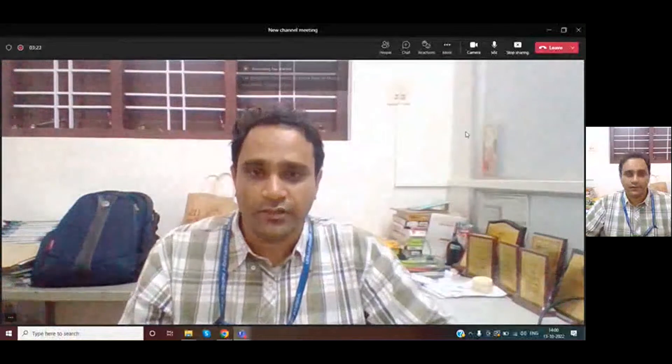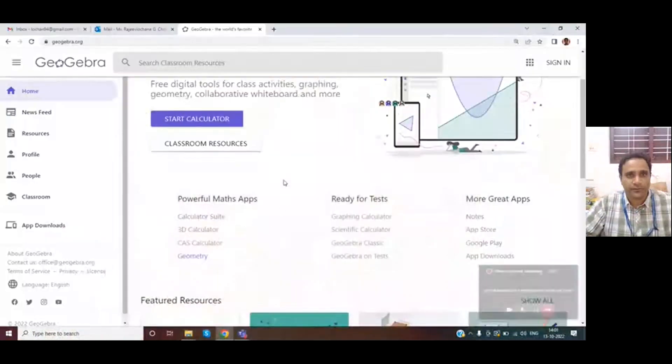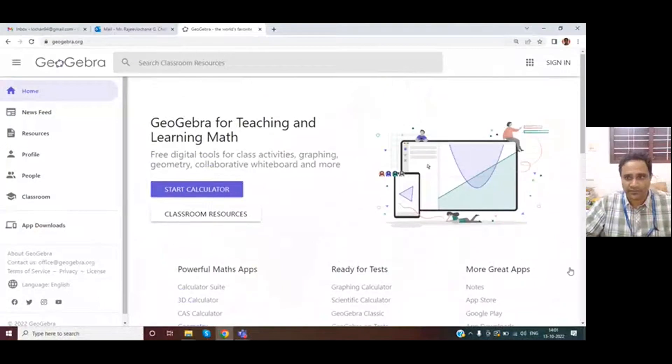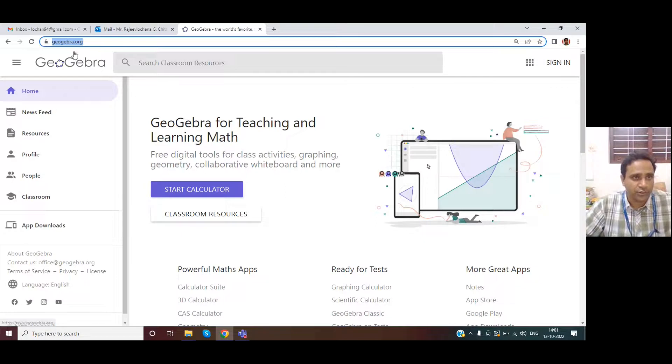Hi, in this video I'll be demonstrating software named GeoGebra. It can be accessed from a web browser by going to geogebra.org. Geo is from geometry and gebra is from algebra, so basically we are trying to learn both geometry and algebra.